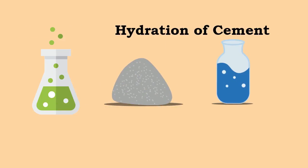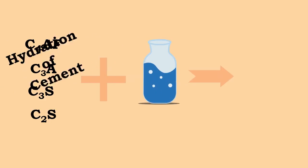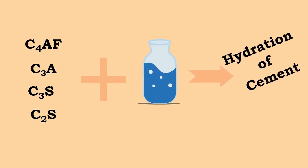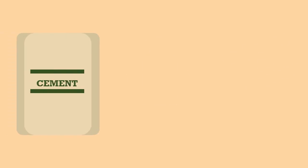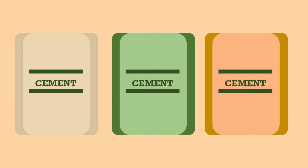Generally, cement particles contain C4AF, C3A, C3S, and C2S compounds. When these chemical compounds react with water, the hydration of cement occurs. This is an important physical property of the cement to be considered while deciding the type of cement for the work.